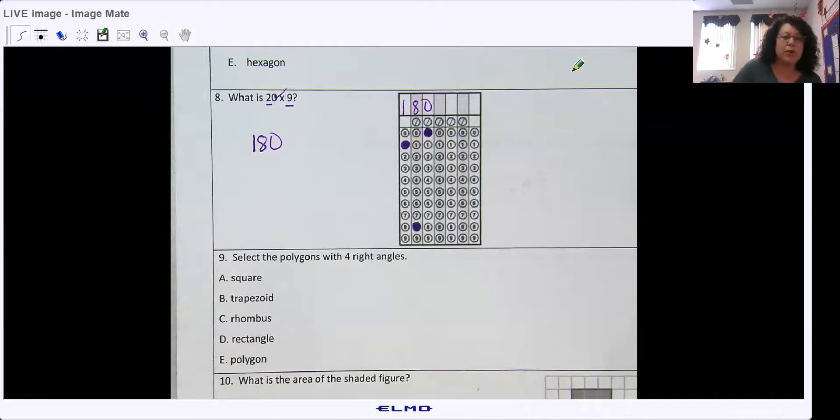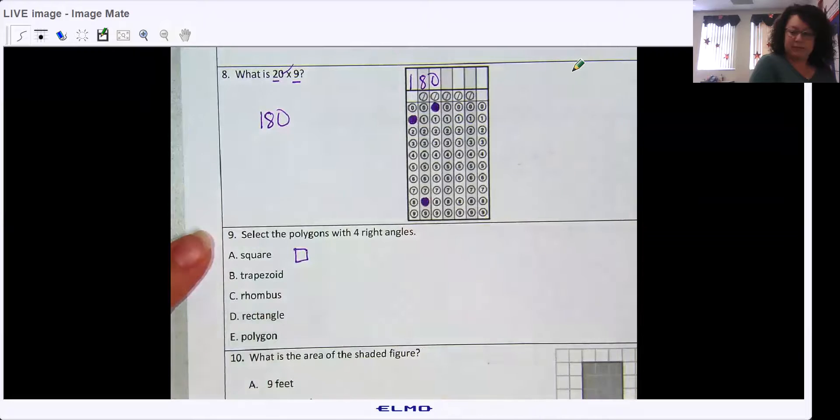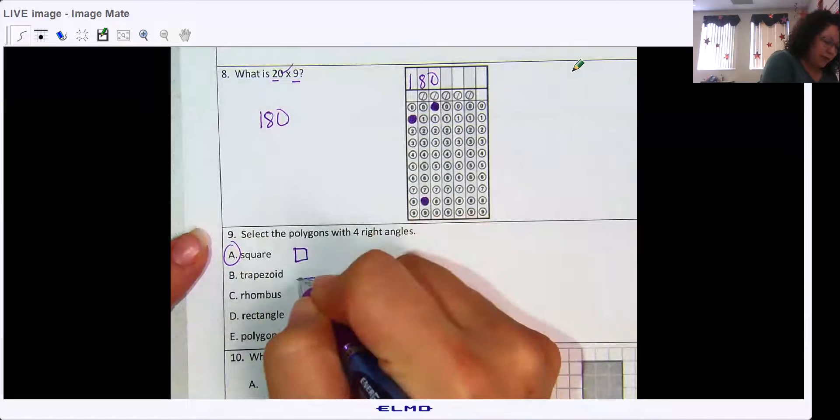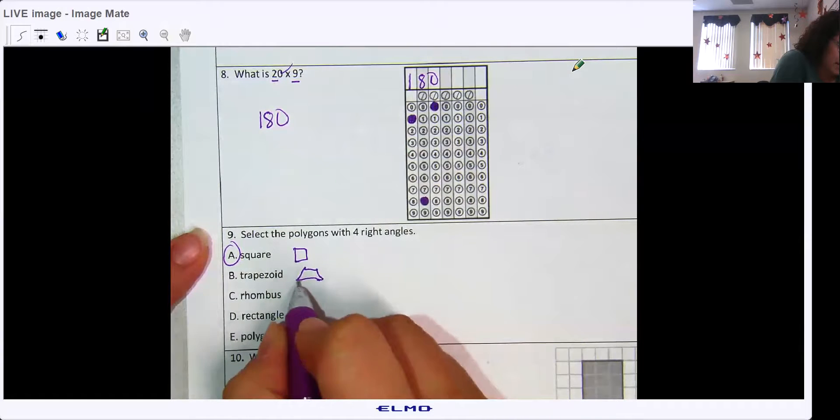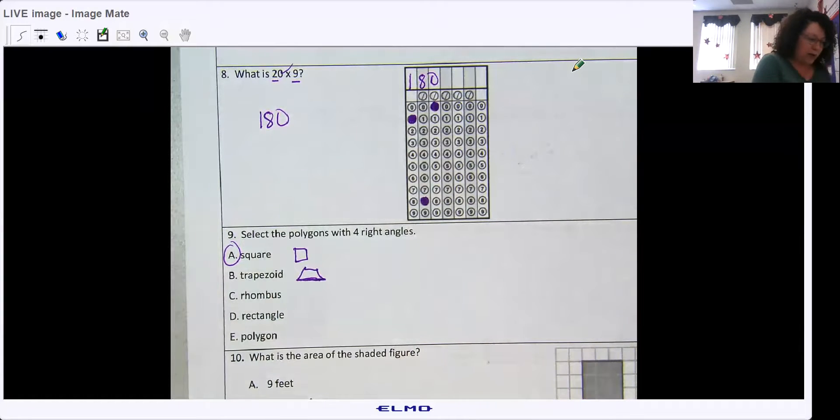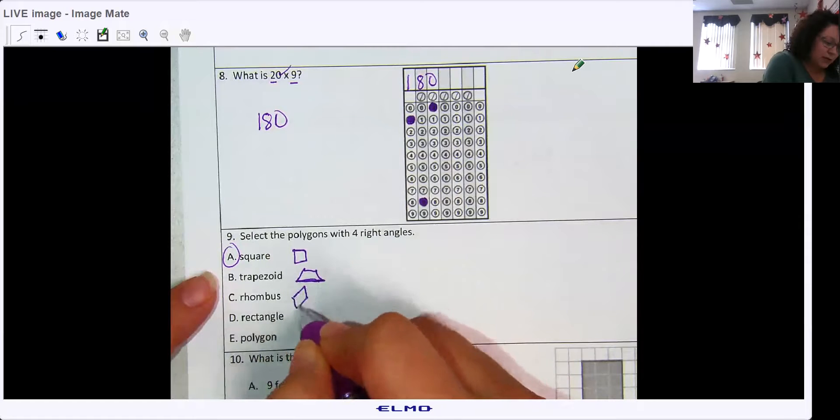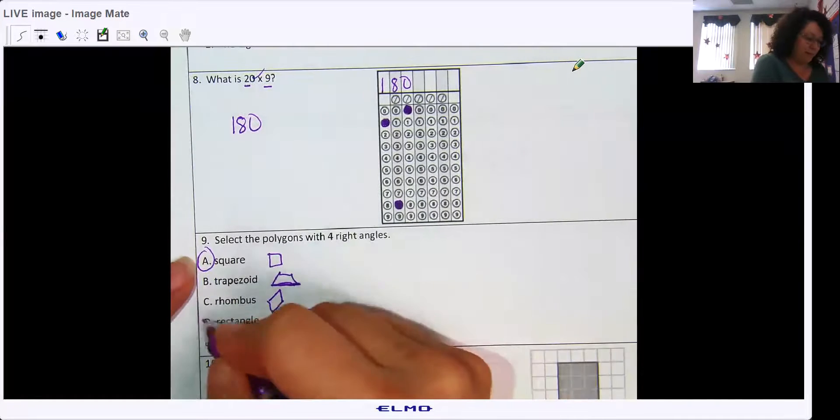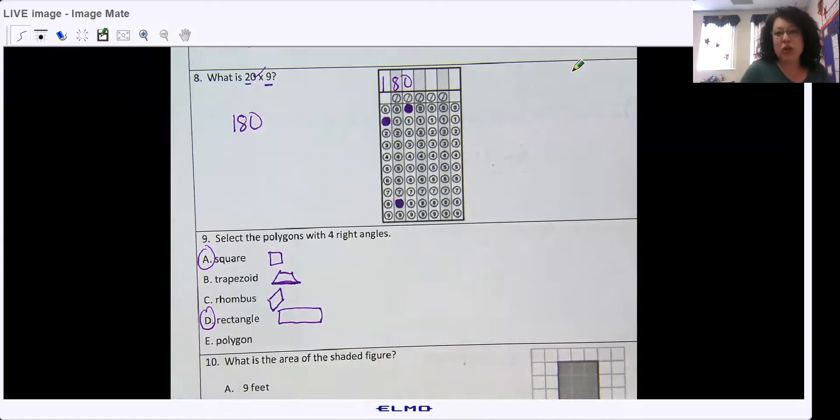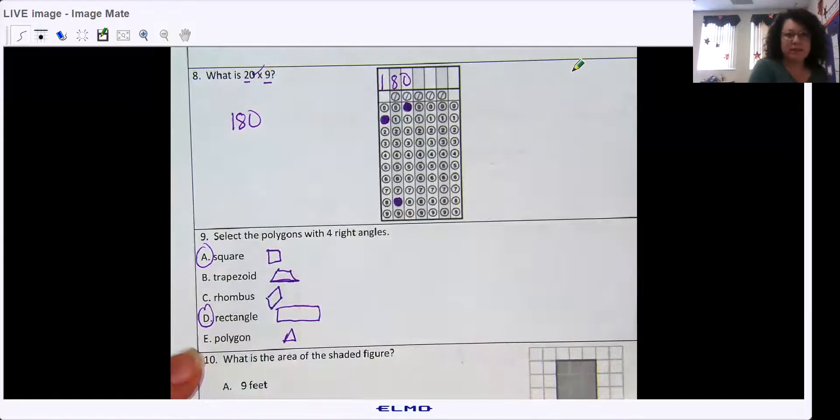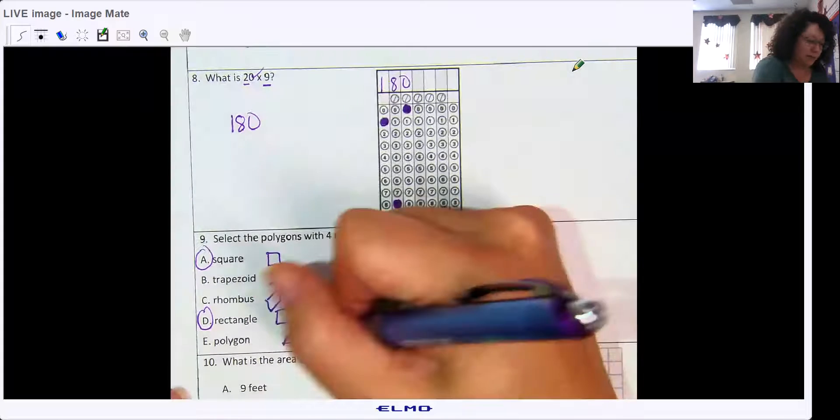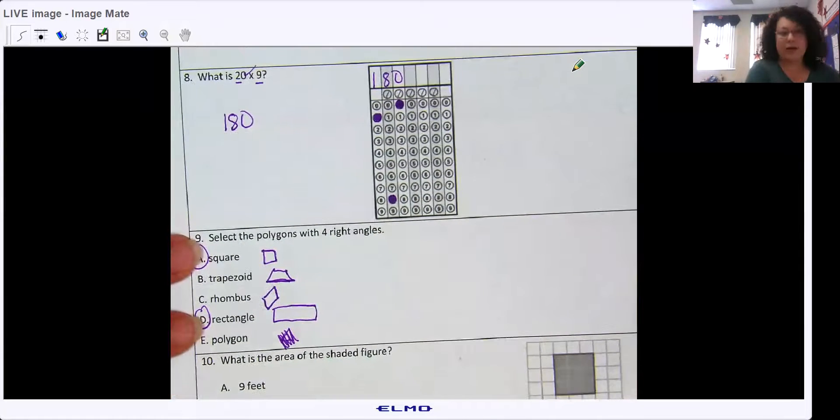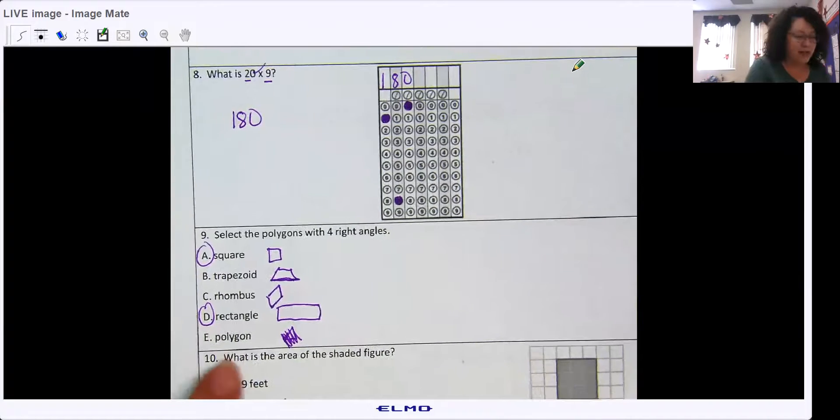Number nine, select the polygons with four right angles. Does a square have four right angles? Yes. Does a trapezoid, remember the trapezoid looks like a trap? No, the lines are very straight. No, they do not have four right angles. There's a rhombus. No, the rhombus is like a kite, so their angles are slanted. A rectangle. Yes. And a polygon. A polygon is just a closed shape. So it could be, this is a polygon, a triangle. No right angles. Some polygons do, square and rectangle, but some polygons don't, which is why this answer is not correct.